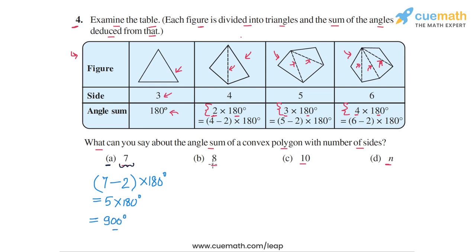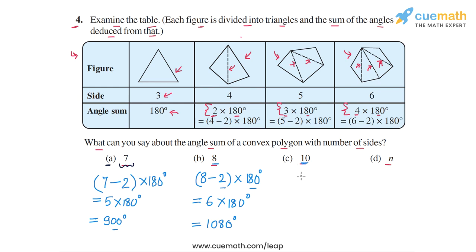For a convex polygon with eight sides, the number of triangular parts is 8 minus 2, which is 6, and the sum of angles for each part is 180 degrees. So the total sum is 8 minus 2 into 180, which is 6 into 180, equal to 1080 degrees. Similarly, for a polygon with 10 sides, the number of triangular parts is 10 minus 2, and multiplying by 180 gives 8 into 180, which equals 1440 degrees.